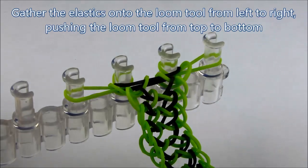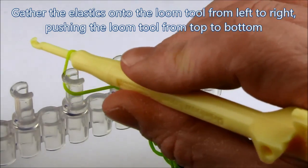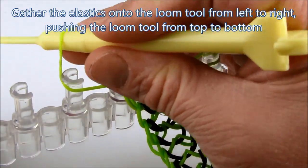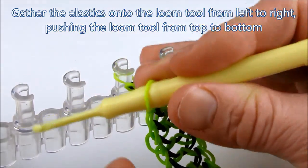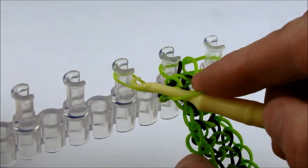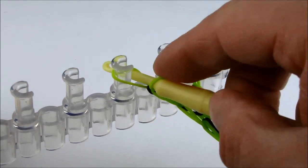Once it's long enough, we want to gather up all the elastics onto the loom tool. Starting on the left, we start looping all the elastics onto the loom tool, feeding the loom tool in from top to bottom.